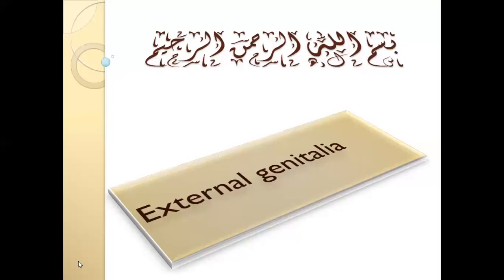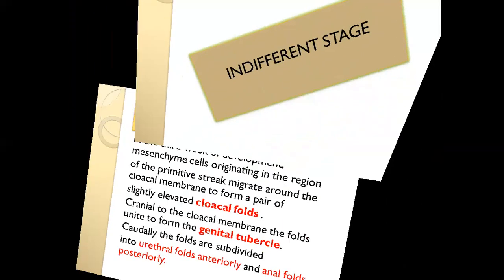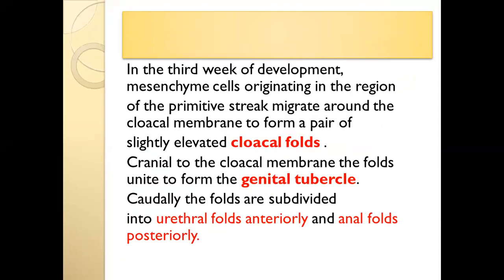The external genitalia develops in different stages, and the early stage cannot differentiate between male and female sex. In the third week of development, mesenchymal cells originate in the region of the primitive streak and migrate to the cloacal membrane. Here, two pairs of slightly elevated folds appear, called cloacal folds. Anteriorly these are called urethral folds, and posteriorly they are called anal folds.